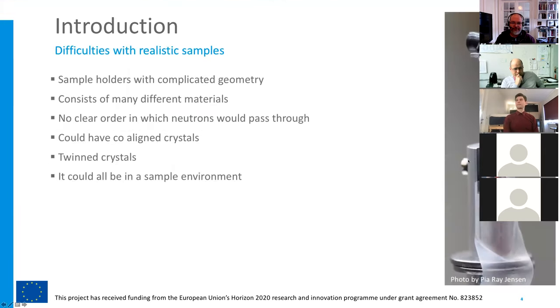My inspiration to writing these Union components was that when we're on a real beam time and see the realistic samples and situations that we have, the simulation had a really tough time dealing with it. It might be assembled with some complicated geometry, consist of a lot of different materials, and there's no clear path through which the neutrons would pass. The reason is that in McStas we have one component after another in sequence, and the rays interact with one at a time. How should we put the sequence here? Does the wire go before or after the sample? It's just not clear. And on top of that, we could have co-aligned crystals, twin crystals, and it could all be in a complex sample environment.